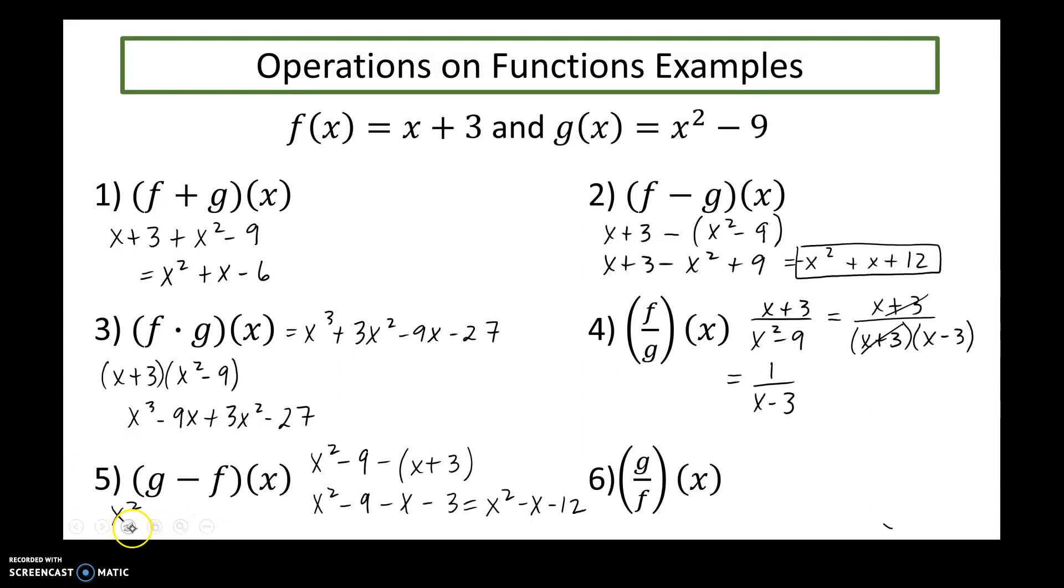And just to point out, this answer here, g minus f is the exact opposite of f minus g. So if I factor negative one out of this, I would get x squared minus x minus 12. So that's not coincidental, we just change the order in which we were subtracted, so their answers are exact opposites of each other.